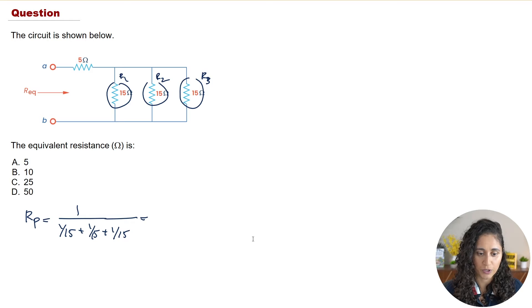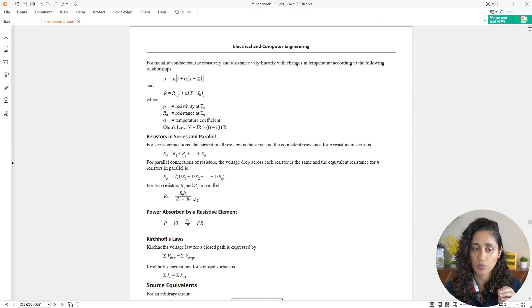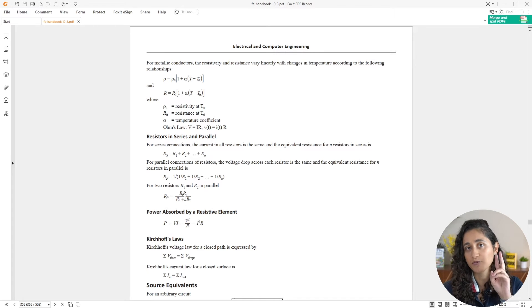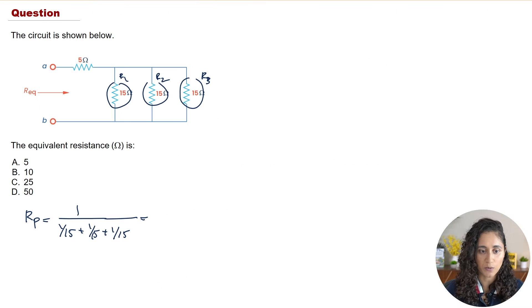I grabbed this equation from the reference manual. There are two equations for resistors in parallel: the general one, and a simplified version for only two resistors. We can only apply the simplified version when we have exactly two resistors; if we have more than two, we use the first equation. That's the one we're using here.